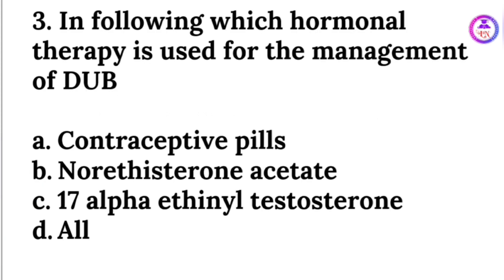Which hormonal therapy is used for the management of disproportionate uterine bleeding? The therapies are contraceptive pills, norethesterone, and 17-alpha ethynyl testosterone. So the answer is all of these.